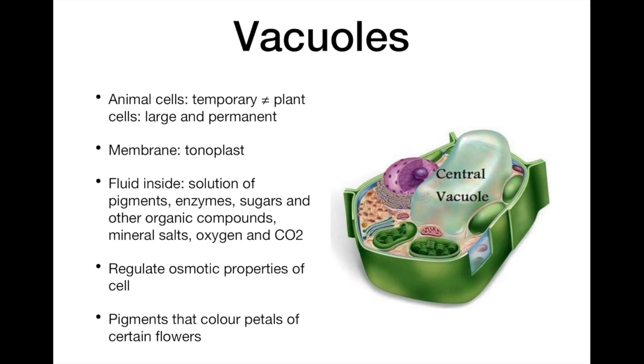The plant vacuole is surrounded by a membrane, the tonoplast, which controls exchange between the vacuole and cytoplasm. The fluid in the vacuole is a solution of pigments, enzymes, sugars and other organic compounds, including some waste products, mineral salts, oxygen, and carbon dioxide.